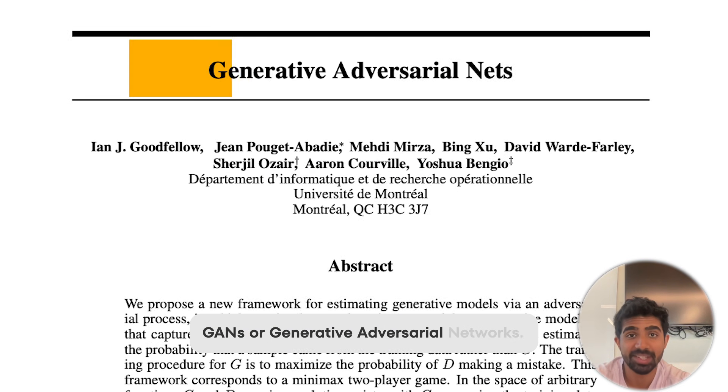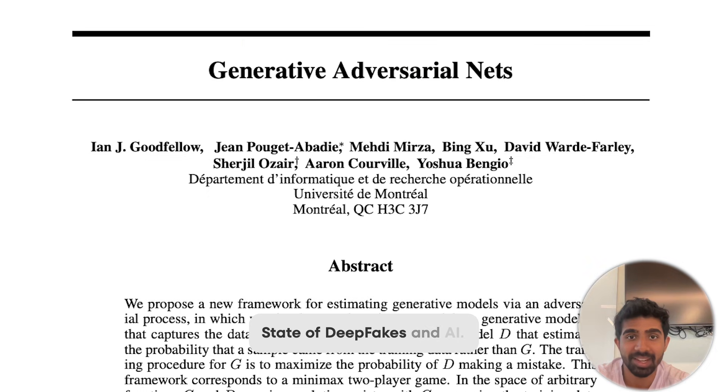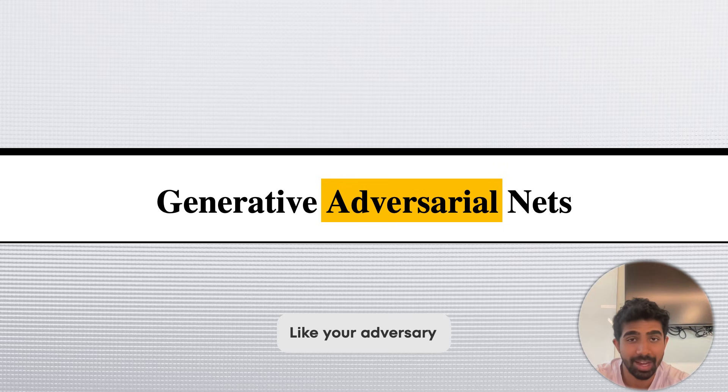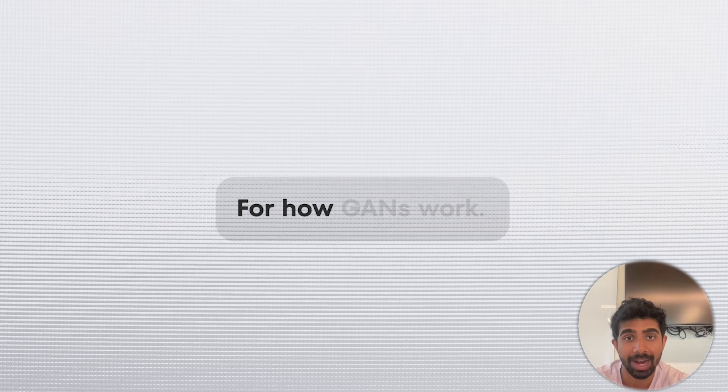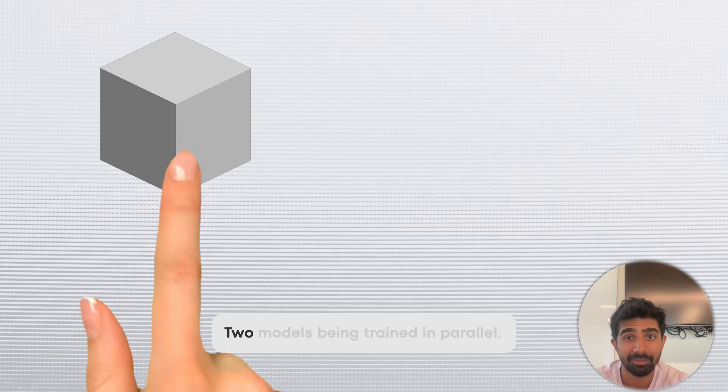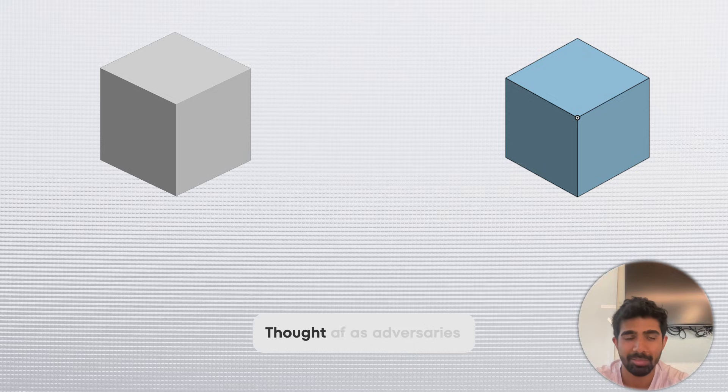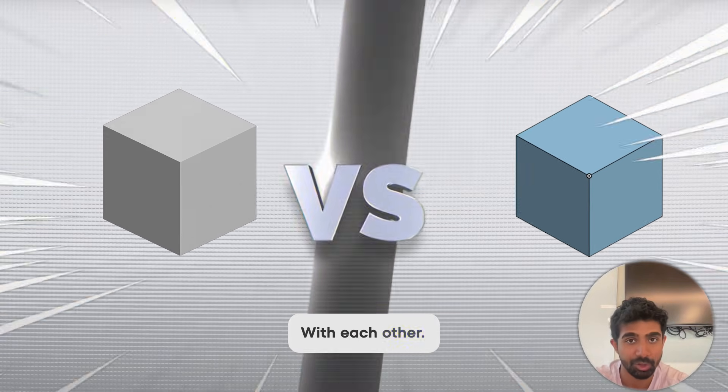Alright, GANs, or generative adversarial networks. This model changed the state of deepfakes and AI image generation forever. Let's just break down what the term means. Adversarial, like your adversary or your enemy. That's actually going to help us understand the high level for how GANs work. We're going to have two models being trained in parallel. These models can be thought of as adversaries or enemies. They're actually competing with each other.